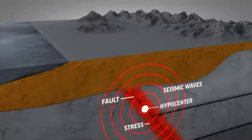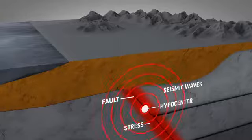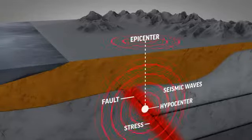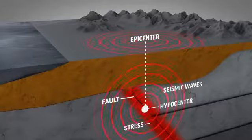The hypocenter of an earthquake is the point on the fault where the rupture begins. The magnitude is a measure of how much energy is released when an earthquake occurs. The epicenter is the point on the Earth's surface directly above the hypocenter of an earthquake, typically located by its latitude and longitude.